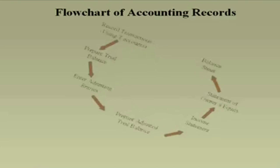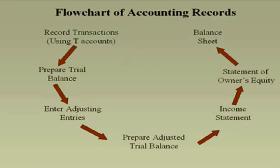Here's a flowchart repeating what I just told you. Initially, you record transactions using T-accounts, then you do the trial balance. After doing the trial balance, you realize there are certain things you omitted or forgot which should be included. These are called adjusting entries — they're actually correcting entries. So you enter those, redo the trial balance, and it's now called the adjusted trial balance. From there, you do an income statement, statement of owner's equity, and balance sheet.